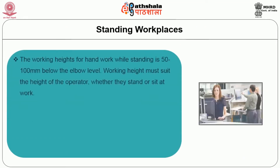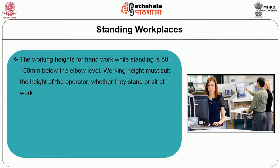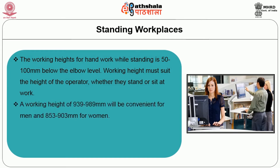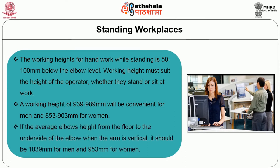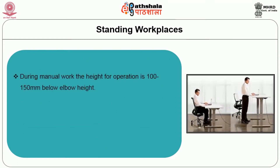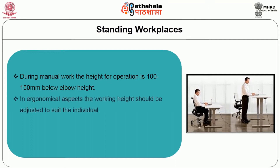Standing workplaces: The working height for hand work while standing is 50–100 mm below the elbow level. Working height must suit the height of the operator whether they stand or sit. A working height of 939–989 mm will be convenient for men and 853–903 mm for women. If the average elbow height from the floor to the underside of the elbow when the arm is vertical, it should be 1039 mm for men and 953 mm for women. During manual work, the height for operation is 100–150 mm below elbow height. In ergonomical aspects, the working height should be adjusted for the individual.